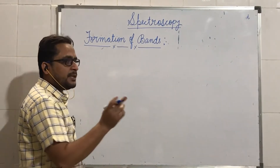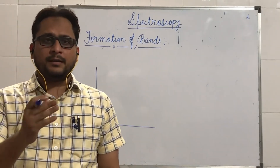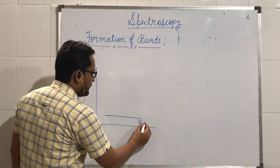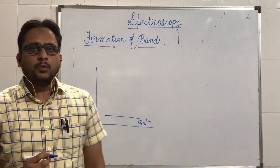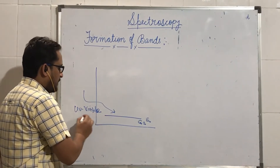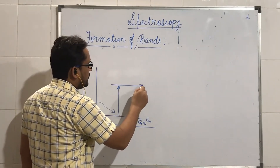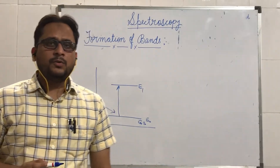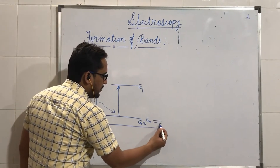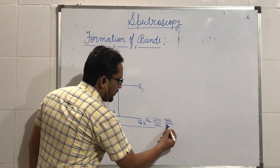The formation of bands requires a definite amount of energy, and when that energy falls upon a sample, the electrons from the ground state get excited and promoted to the next level. As you can see from this figure, we have the ground state which is denoted as the zero electron state. When incident light in the UV-visible range falls upon the sample, electrons are excited to the next higher level which is denoted as E1. Electronic transition requires the highest amount of energy, and therefore electronic transitions are always associated with vibrational levels, which are in turn associated with rotational energy levels.